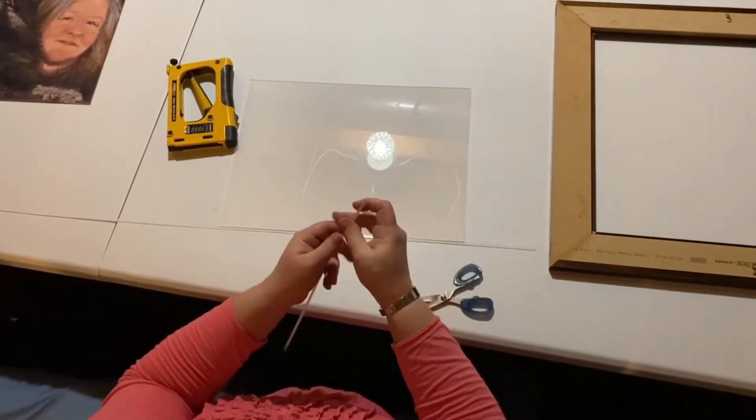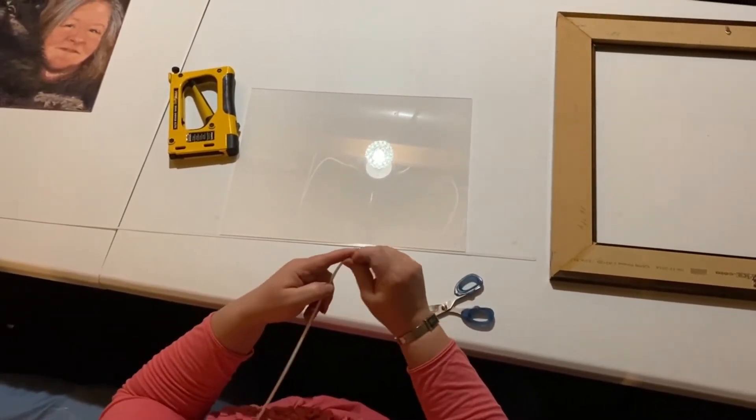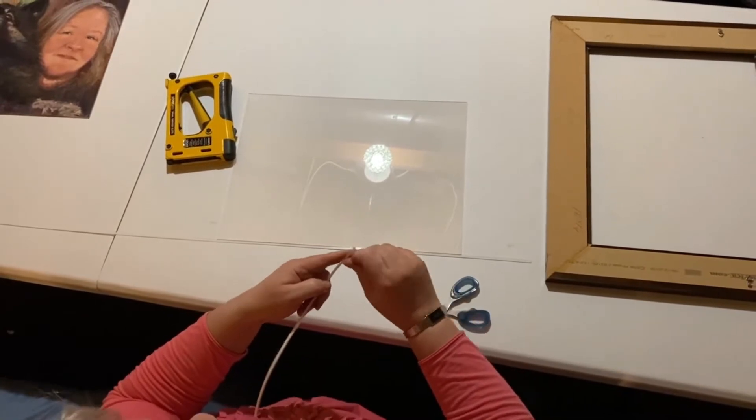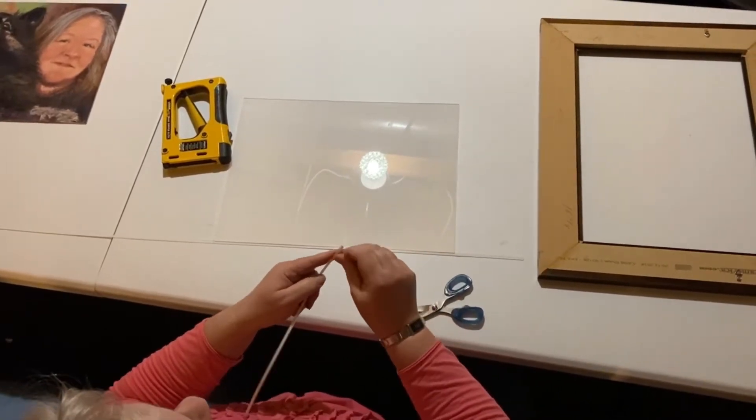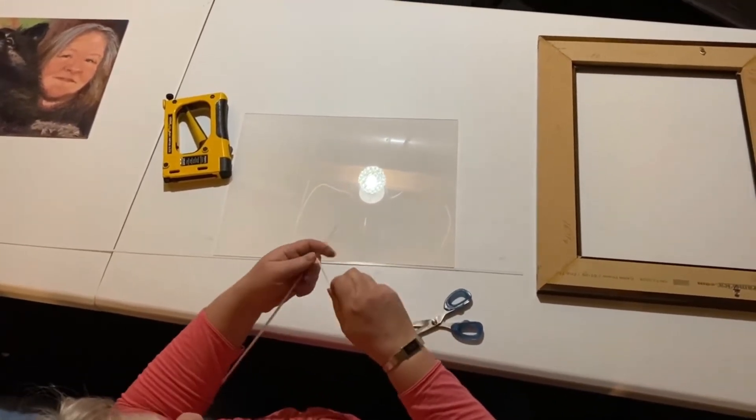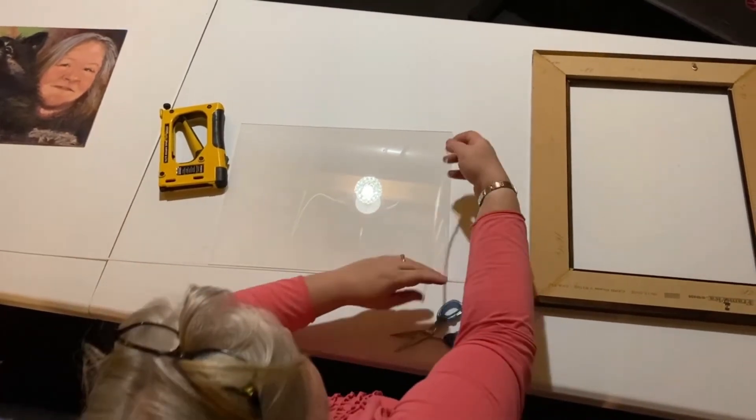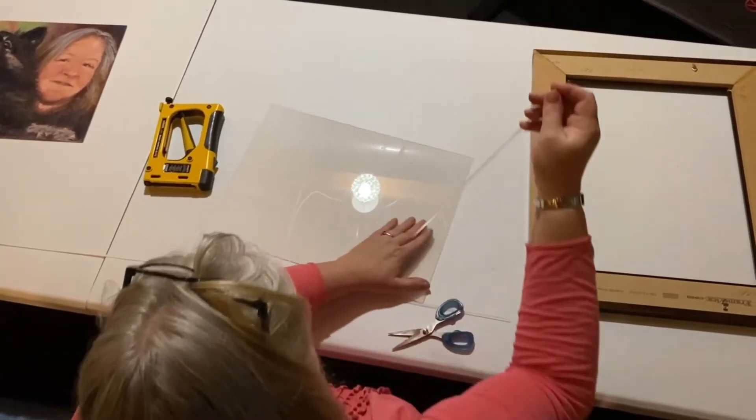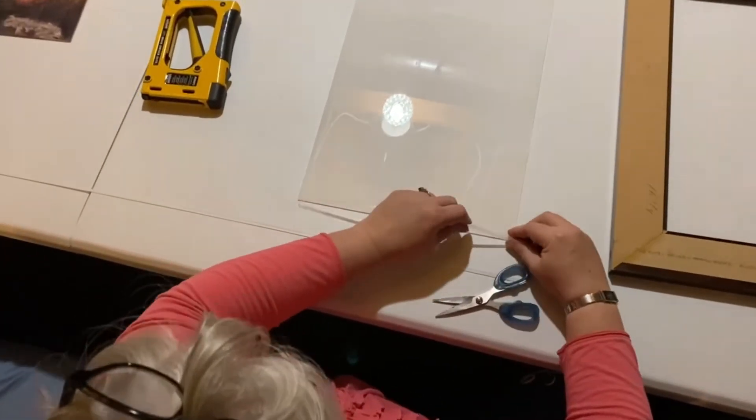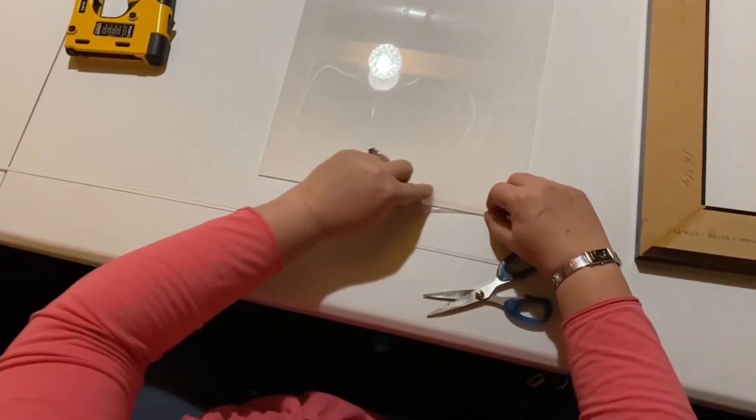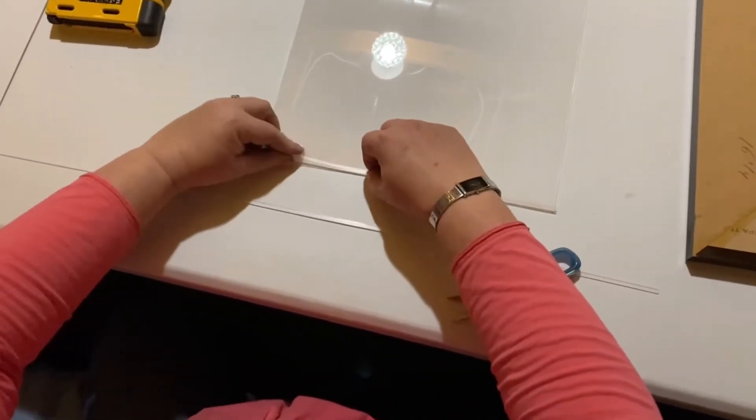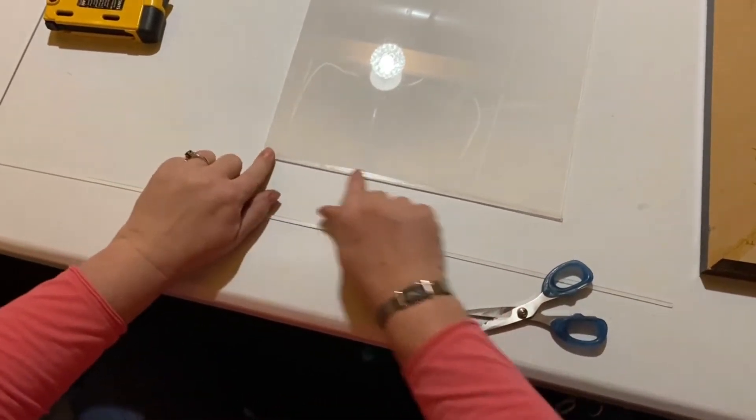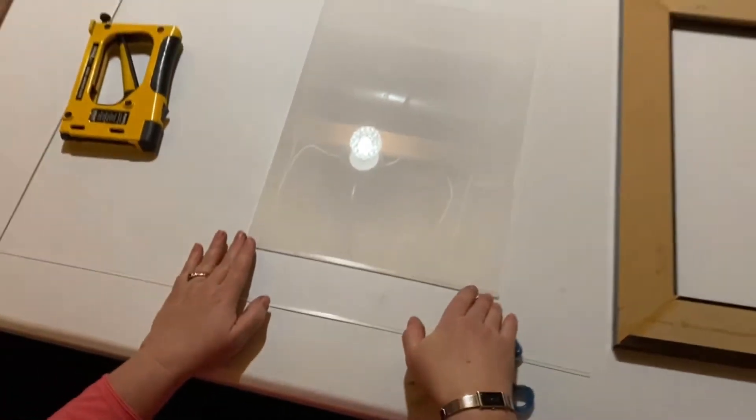Then I'm going to peel the adhesive back from it and stick it right along the edge of this acrylic where I peeled back the plastic. You see how I'm putting it right along the edge. Now we're going to repeat that for all four sides.